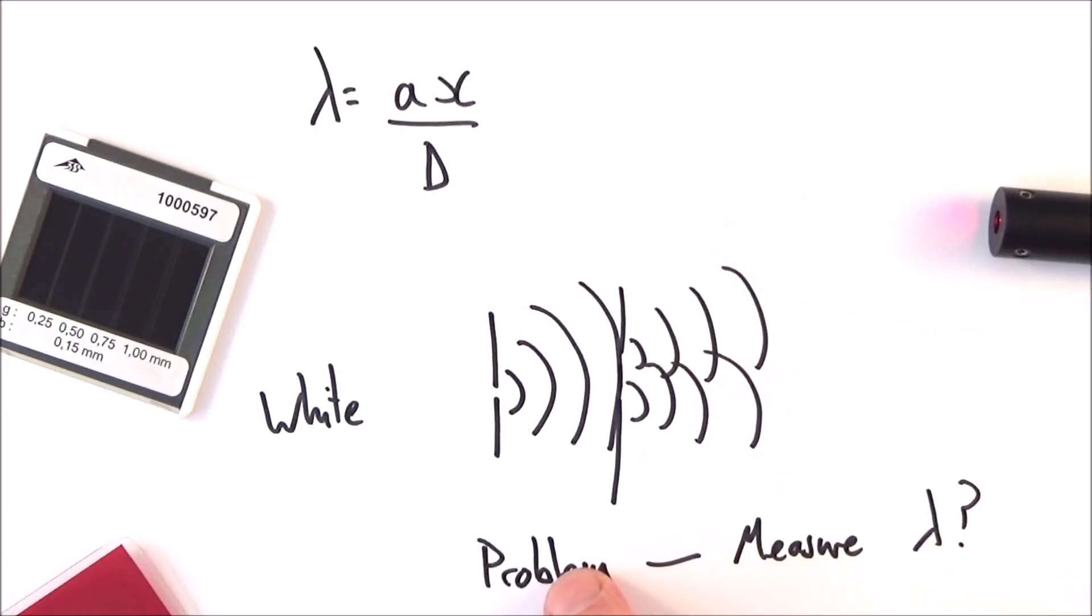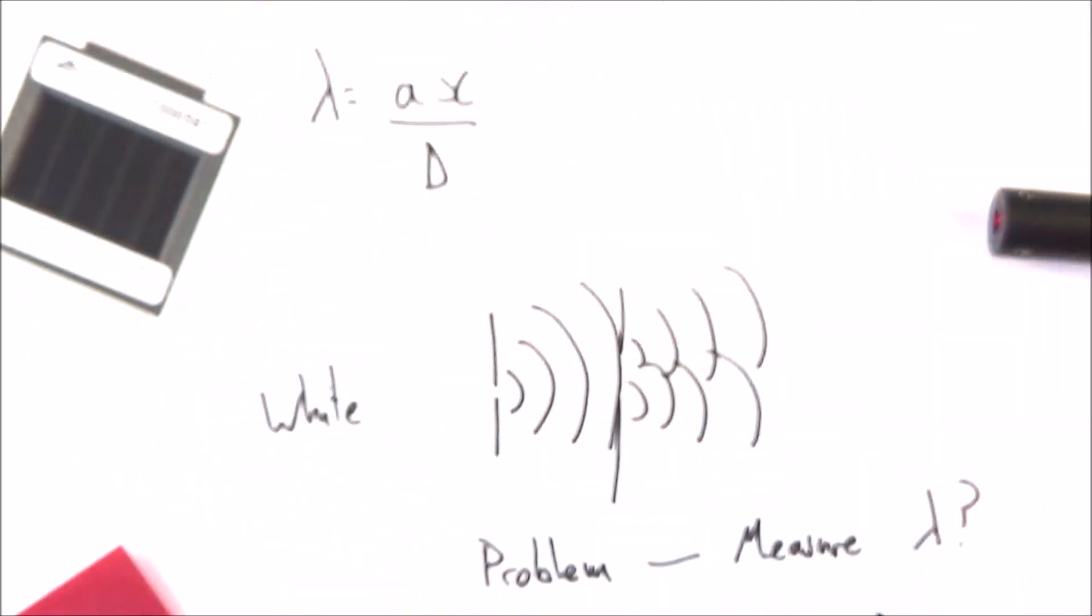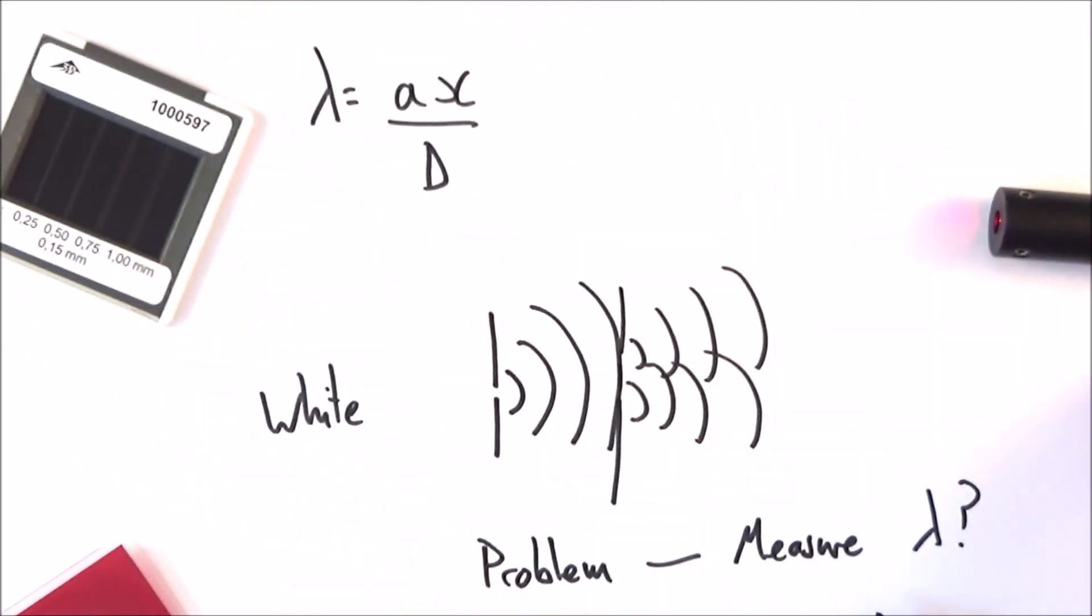So the problem with this experiment is that if you want to measure the wavelength of light, it's very hard to do because the slit is so small. That means not a huge amount of light actually gets through these very tiny slits that we have here. That means when it comes to measuring the fringe separation, it's often hard to get a good precise reading. Is there a better way? Yes there is.